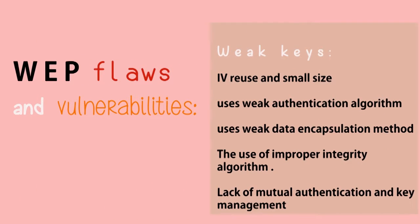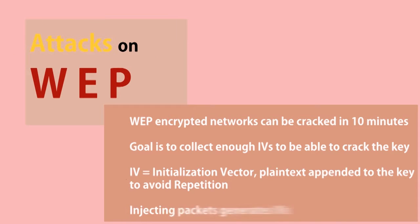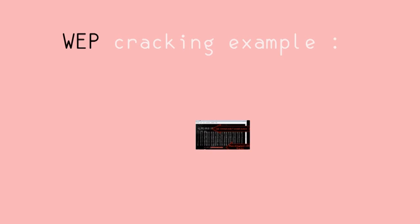WEP Flaws and Vulnerabilities: Weak keys, IV reuse due to small IV size, uses a weak authentication algorithm, and uses a weak data encapsulation method. Attacks on WEP: WEP-encrypted networks can be cracked in 10 minutes. The goal is to collect enough IVs to be able to crack the key.